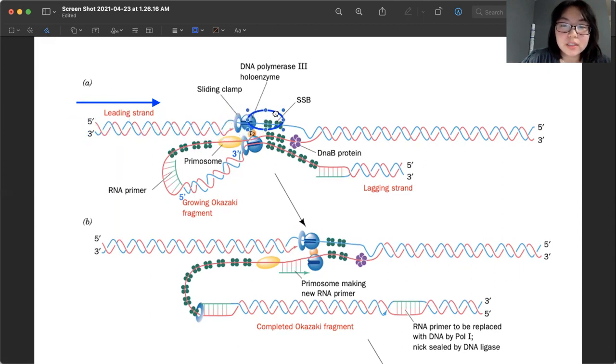And so continuing on from here, the SSBs will drop off and keep synthesizing this way as it unwinds. Yeah, so that's why leading strand is continuous synthesis, because there's nothing stopping it from going five prime to three prime.